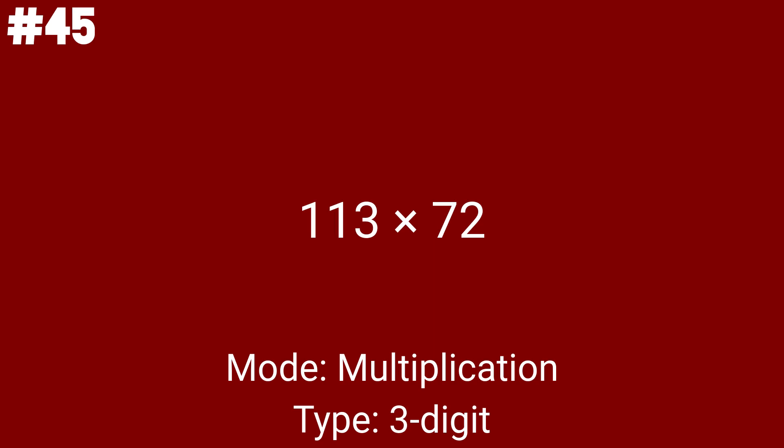Problem number 11 is 113 times 72, the first 3-digit multiplication problem. This is a 3 by 2 instead of a 3 by 3. The twelfth math problem is 490 times 320. Again, both numbers end in a 0, so you only need to multiply as you would with a 2 by 2, but then multiply by 10 twice.